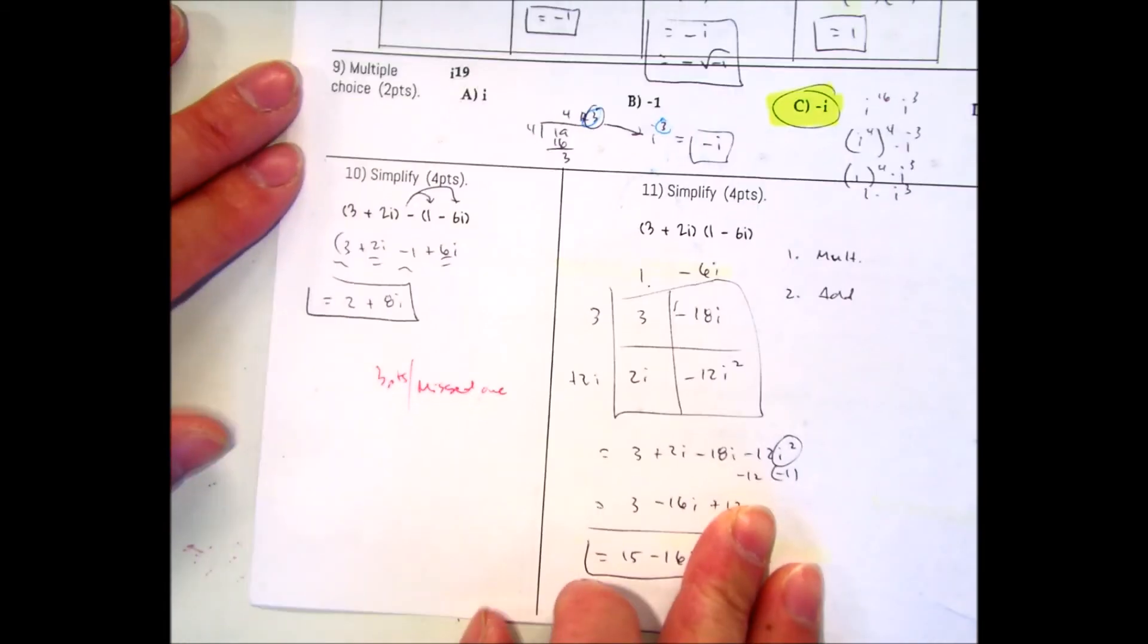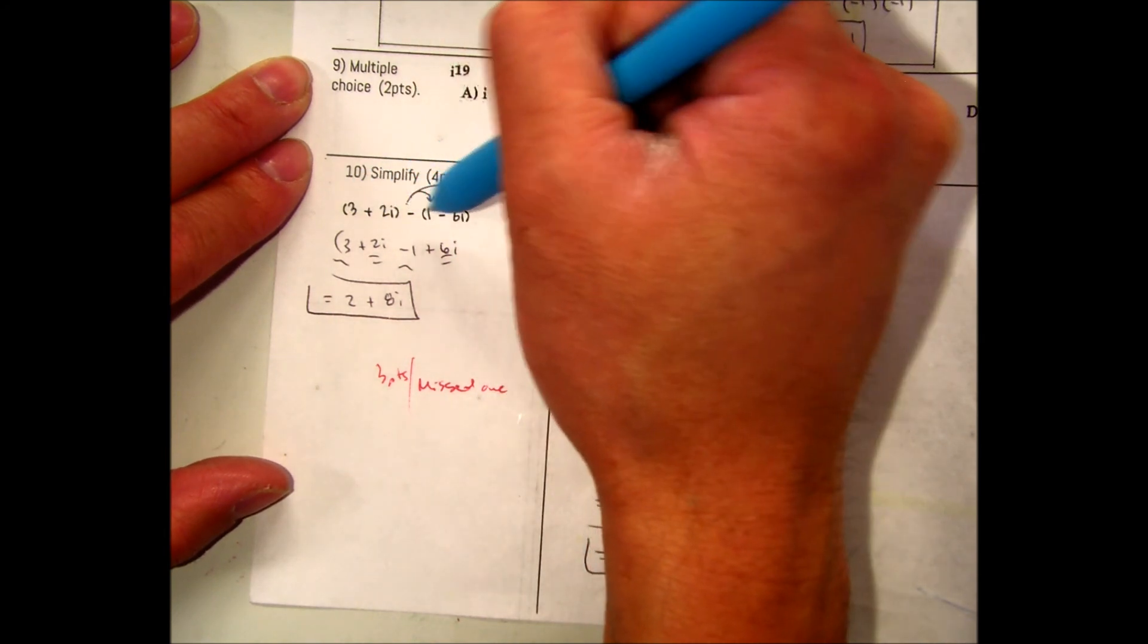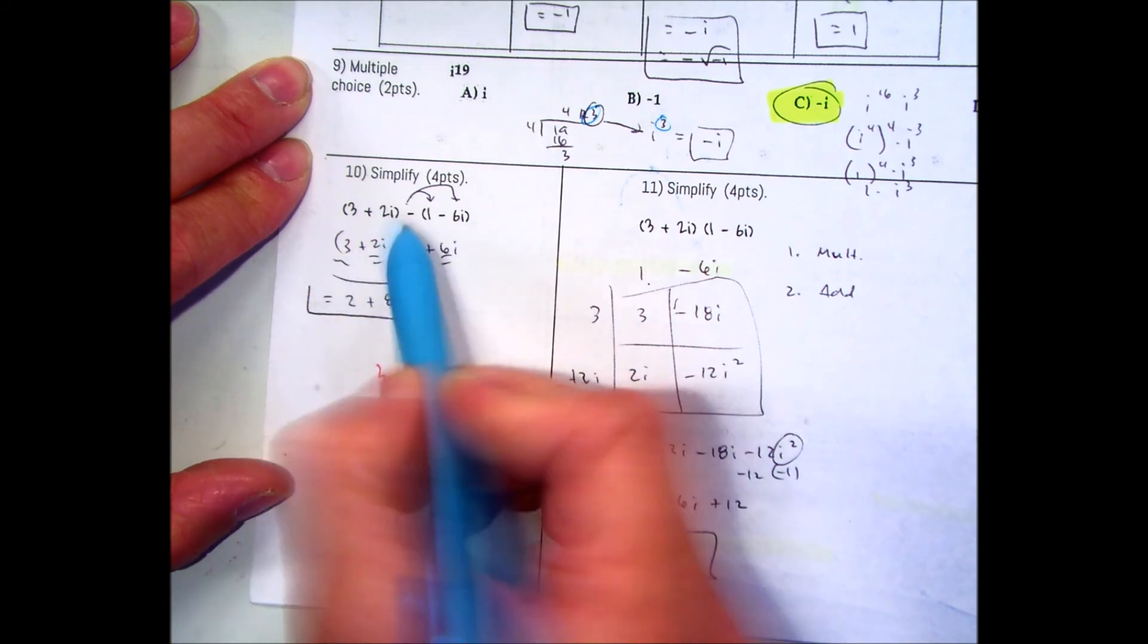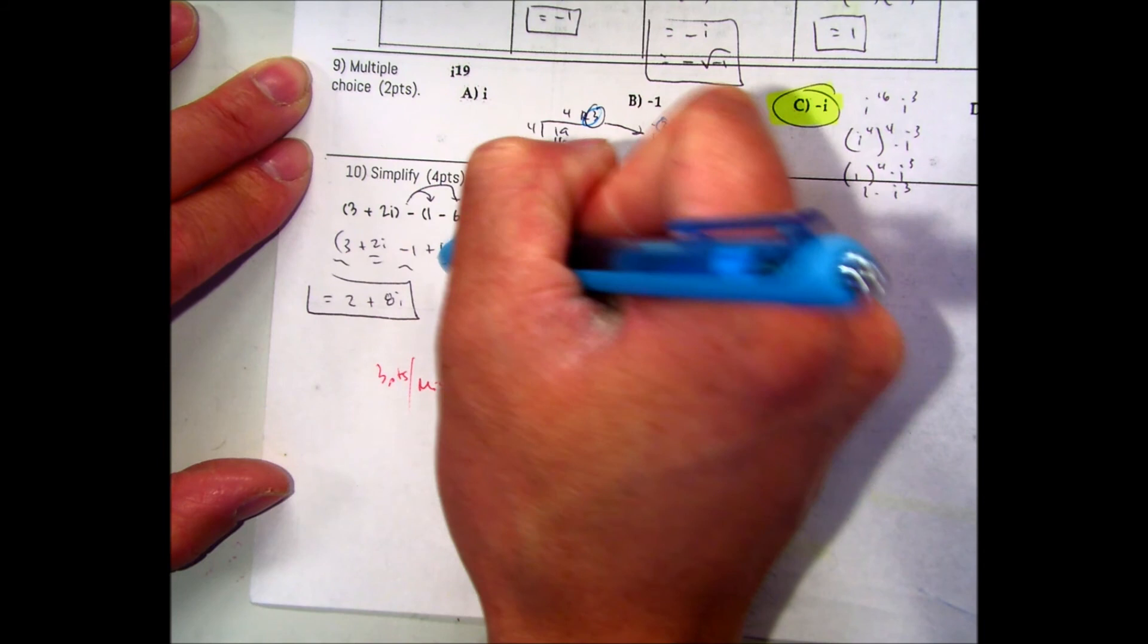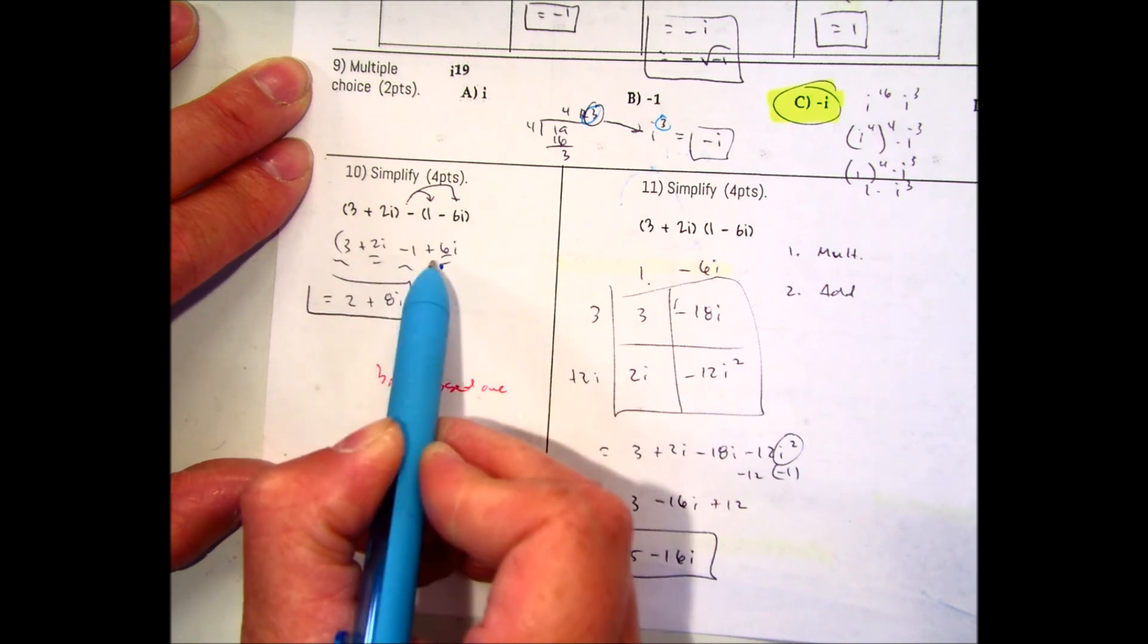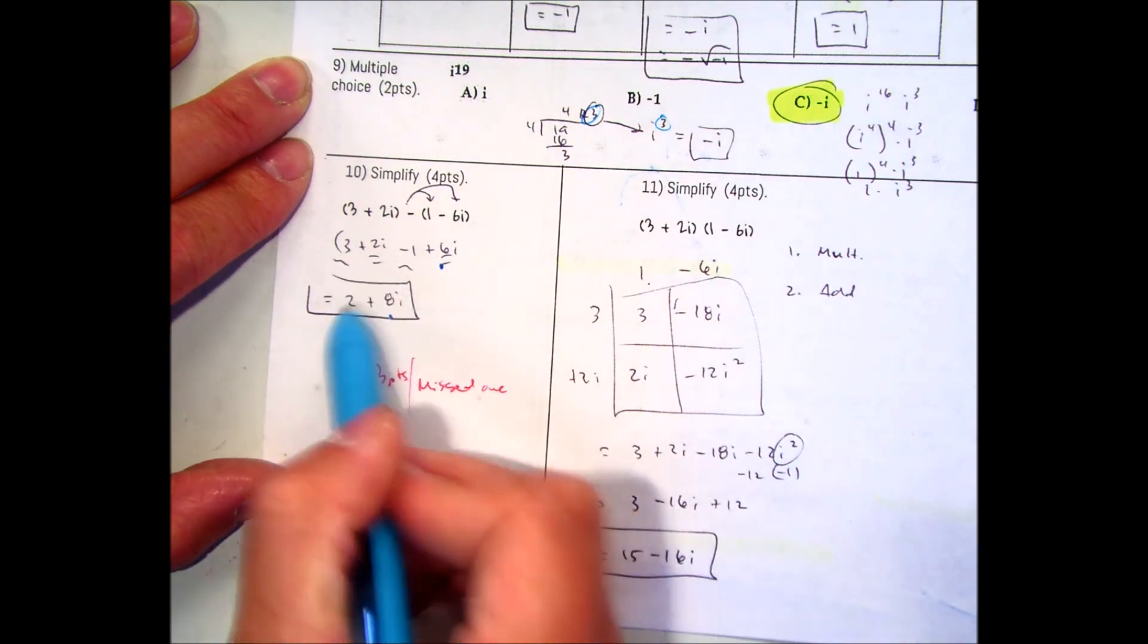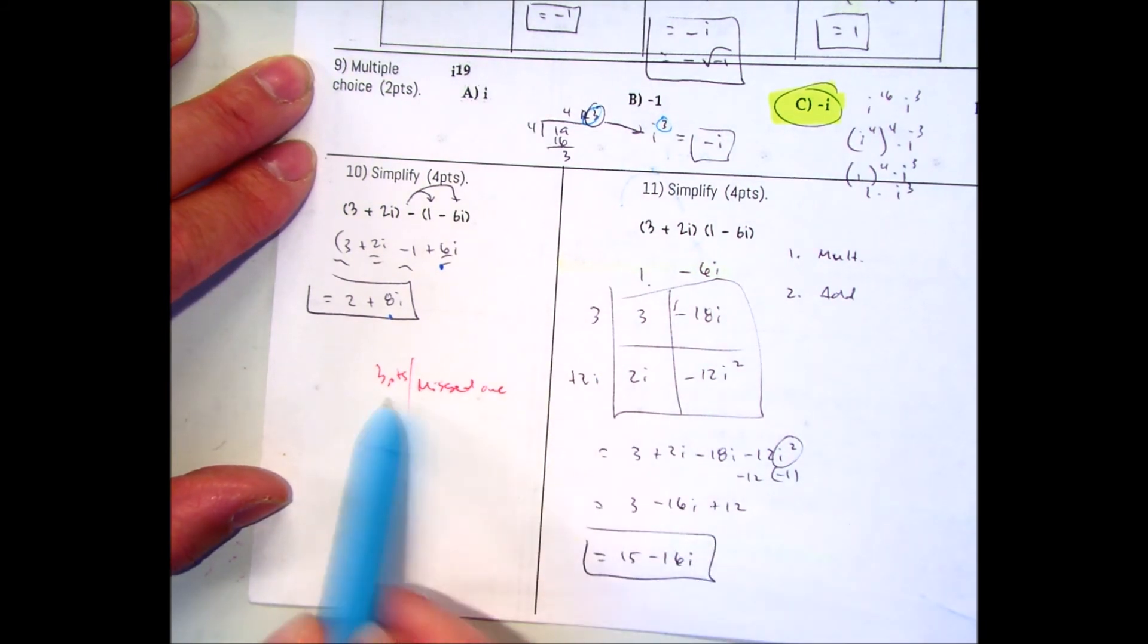Question number 10. I have 3 plus 2i minus 1 minus 6i. So these parentheses are important. I don't need these parentheses here. This parentheses I'm distributing. So the opposite of 1 is negative 1. Opposite of negative 6i is positive 6i. And then I'm just looking for like terms. Those with the double underlines. 2 plus 6 gives me an 8i. And 3 and a negative 1 gives me a 2. So 2 plus 8i is my answer. If you missed one of those, we give you partial credit.